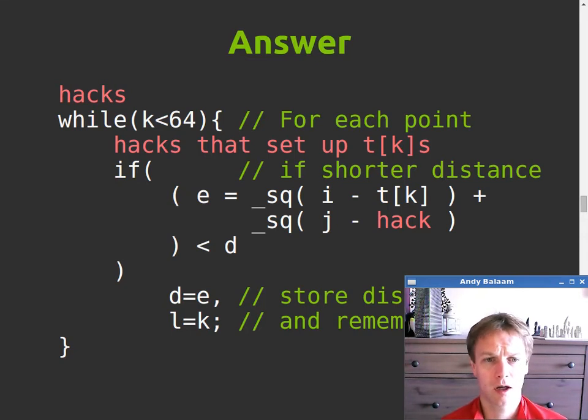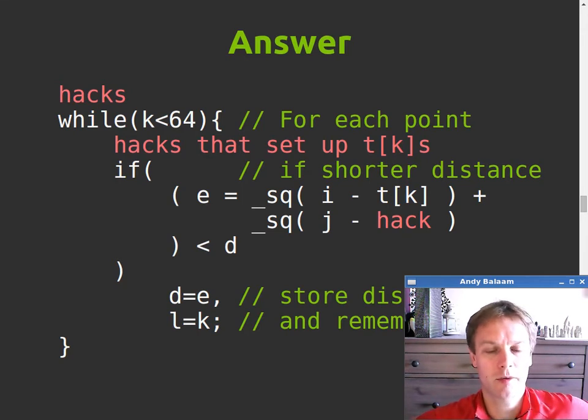So loop through all the sites and then measure the distance. So this if is basically saying, give me the distance to this site. So e is this temporary variable, which basically holds onto the distance for a second. And then what we do is we do i minus tk. So what we're saying is that tk is basically the x coordinate of this site. And i, we know, is the x coordinate of the pixel we're looking at at the moment. So take one away from the other and then square it. And then add on j minus and then something which is a hack which I'll talk about in a second, which is the y coordinate of the kth site. So square that as well and add them together.